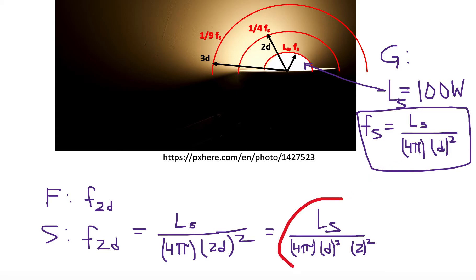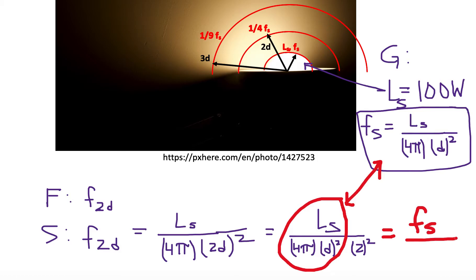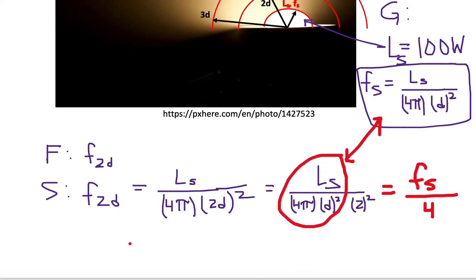We can see that L_s / (4πd²) is just F_s, so we substitute it in. The flux at 2d equals F_s divided by 2 squared, which is 4. So the flux at 2d is one quarter of the original flux at the surface of the light bulb. If you move to a distance of 2d — where d is the diameter of the light bulb — the flux or brightness has decreased to one quarter of the original value.